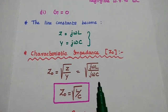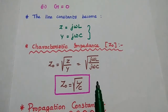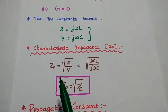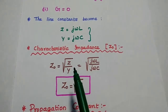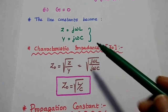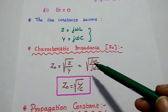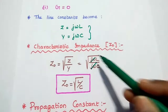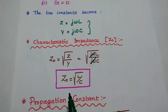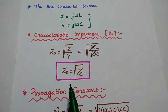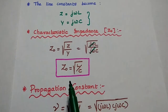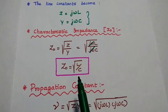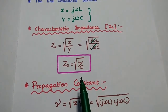From this, we can find out the characteristic impedance value Z naught. That is equal to the square root of Z by Y. Substituting these two values, we get the square root of j omega L by j omega C. The j omega terms cancel, and we get characteristic impedance Z naught equal to the square root of L by C.